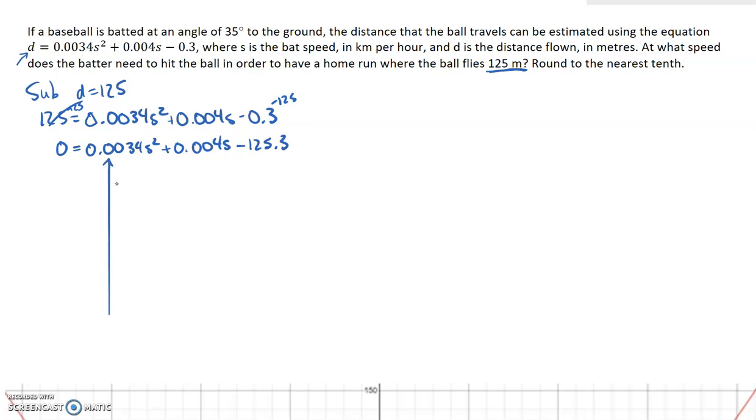0 equals 0.0034s squared plus 0.004s minus 125.3. This is my a value. This is my b value. This is my c value. Keep in mind that c is negative in this case.